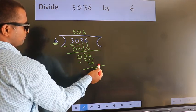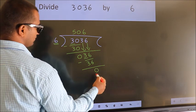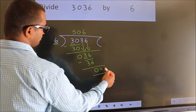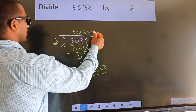No more numbers to bring it down. So, we stop here. This is our remainder. This is our quotient.